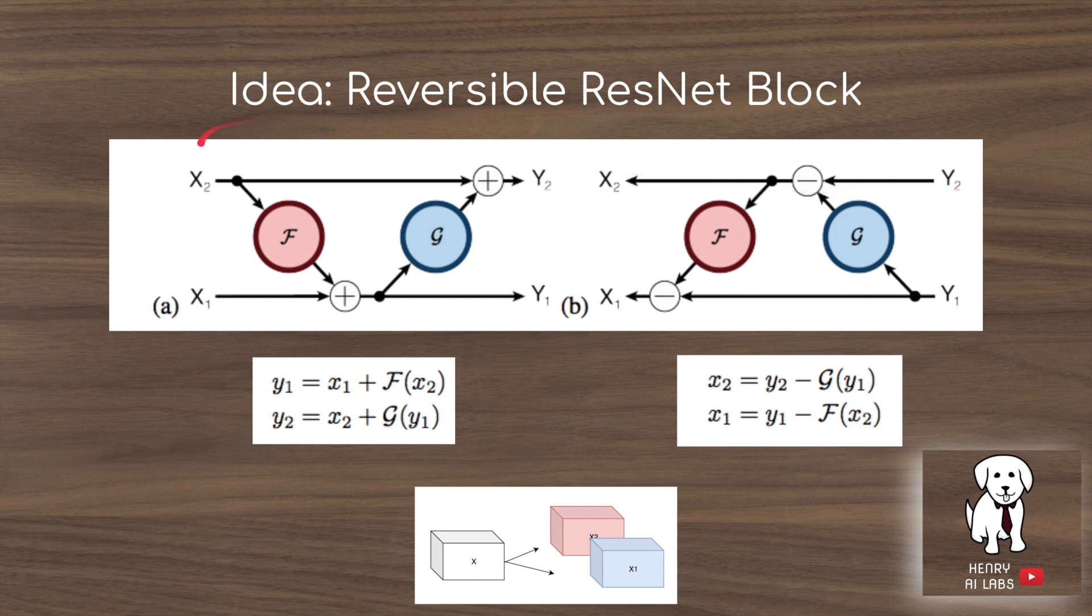This diagram shows what the forward pass of this would look like. The x1 and x2 are split along the channel dimension, and then they're used to compute the y1 and y2, such that if you have y, you can just split along the channel axis and then use this to derive x1 and x2, and thus x.